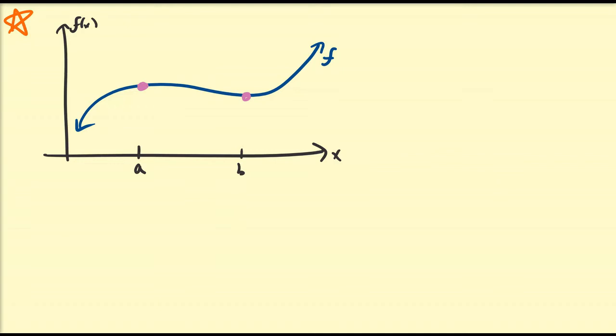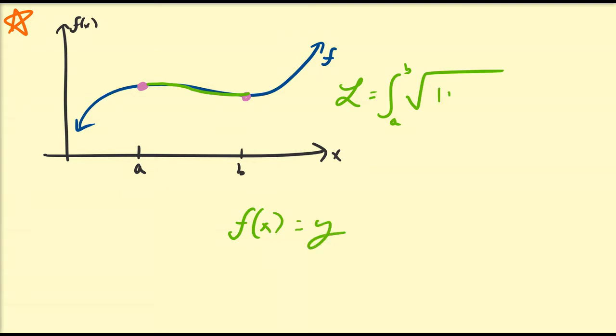Hello there. In a previous video we discussed how to find the arc length of curves that are defined in Cartesian form. So if we have some function f equal to f of x, defined on some closed or open interval a, b, then we know we can find the arc length via the relationship: L equals the integral from a to b of the square root of 1 plus the square of dy/dx, dx.